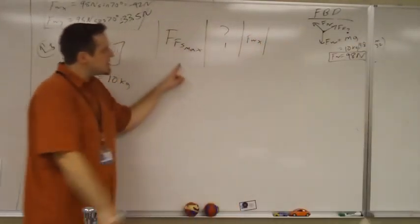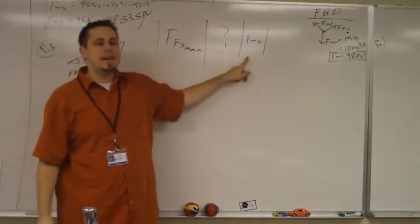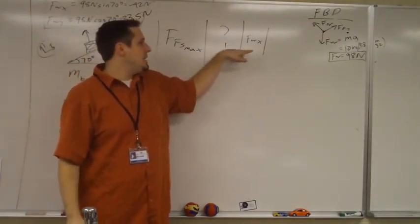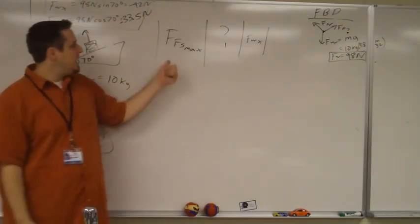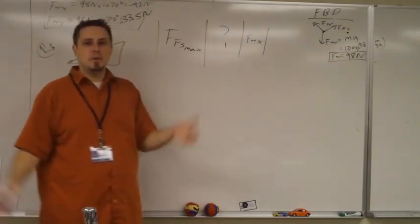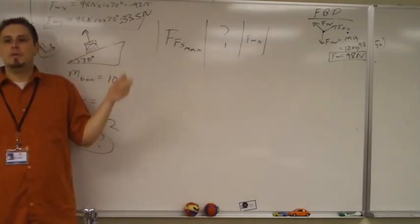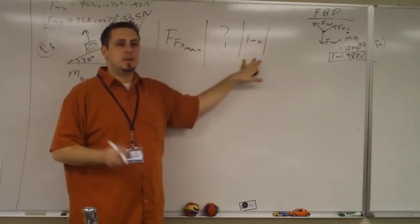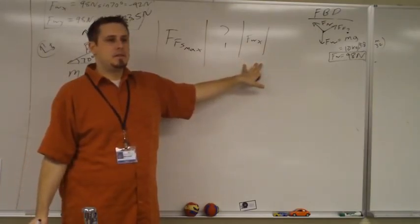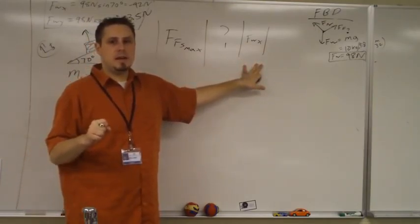So we're going to make a comparison between the force of friction static max and the weight in the x direction. If the weight in the x direction is bigger, the object will move. If static max is bigger, the object will not move or stay put. So, questions on why we're going to be comparing these two? Because that's the new thing. We're okay with that? All right.